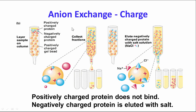Anion exchange chromatography is based on charge, which is a pH-dependent process. If you have an anion exchanger — a positively charged resin — the negatively charged proteins will bind to it, while the positively charged proteins will be repulsed and go through in the wash. After binding, you wash off anything that won't bind, then elute the protein with a gradient of increasing sodium chloride, which can separate out multiple negatively charged proteins.